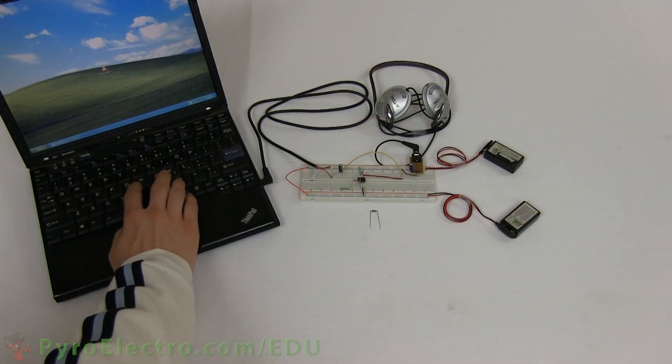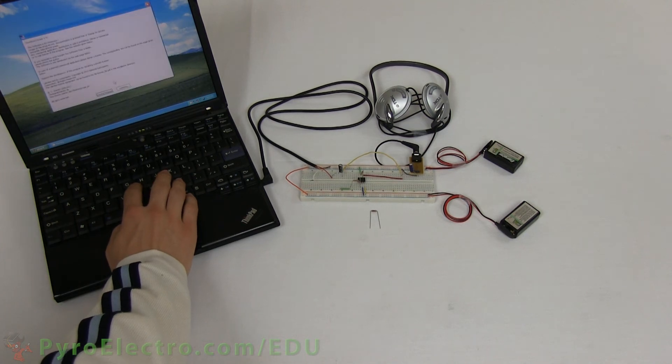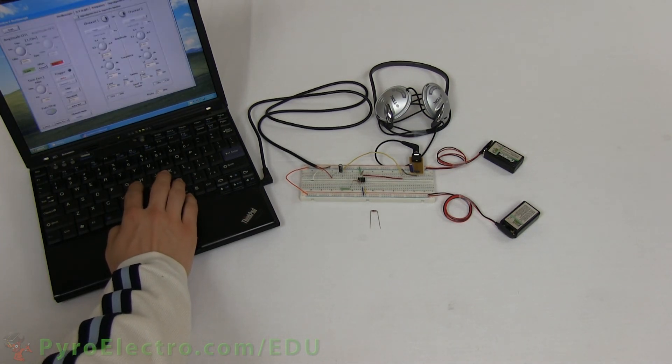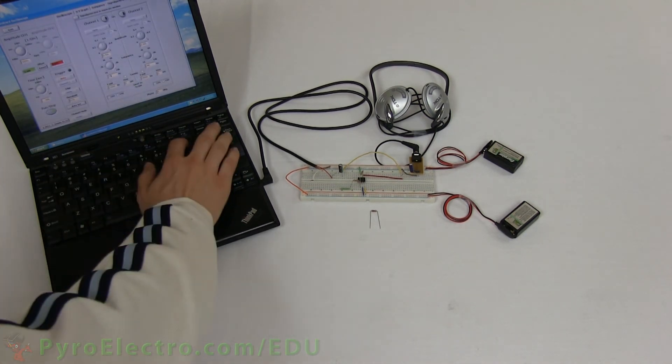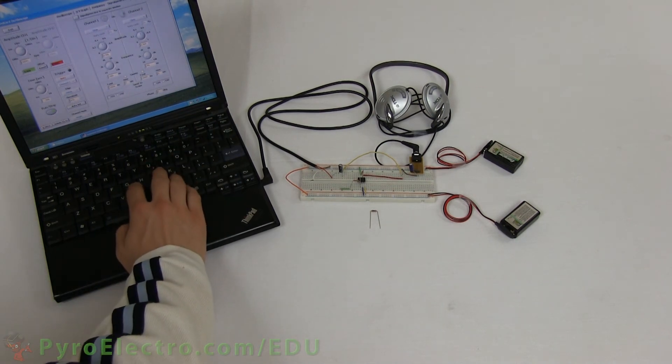With the circuit complete, let's open up the sound card oscilloscope program that we've been using in this course and tell it to start generating a tone. The initial tone shouldn't be very loud.